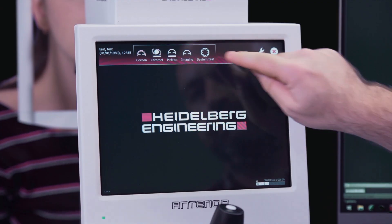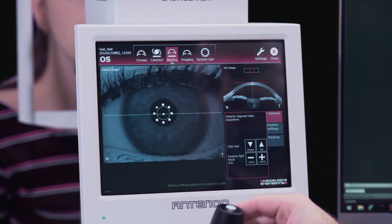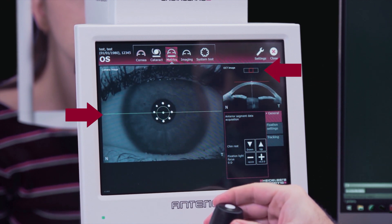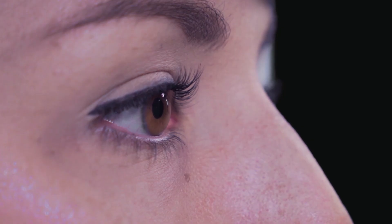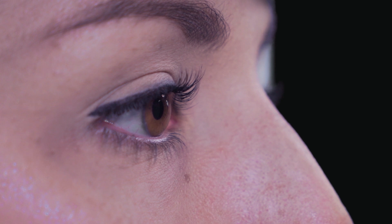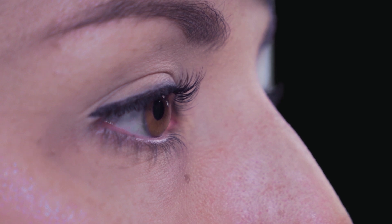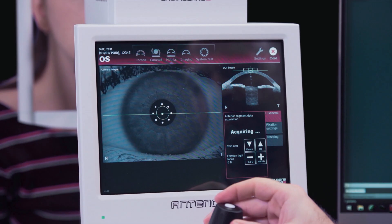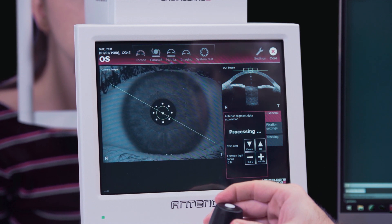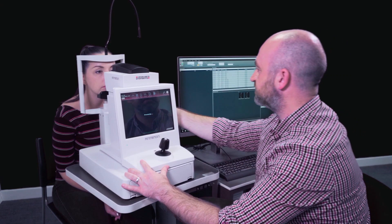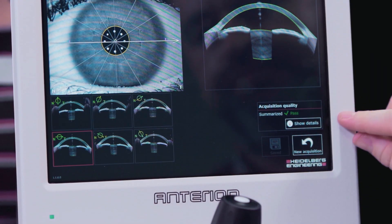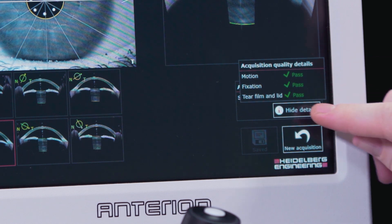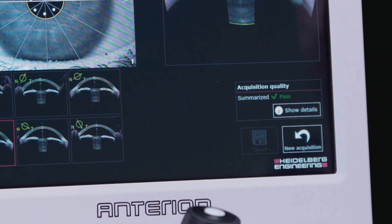Choose the Metrics app from the touch screen. Align the patient in the camera image and OCT image window until the horizontal lines turn green. Ask the patient to blink and keep their eyes open very wide for the Metrics app, and press the joystick button to acquire the image. Review the segmentation of the OCT section images before checking the acquisition quality summary, and repeat if required.